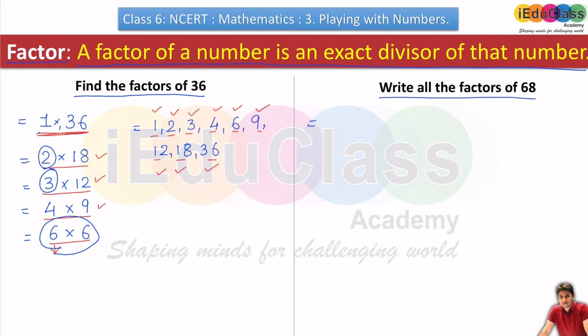Let me write the same way as I told you. 1×68 - the number 1 and the number itself are always by default factors of a given number. If you see the other numbers, as it is an even number, so 2×34 you can write, then 4×17 you can write, then 17×4 same way, 34×2, and 68×1.